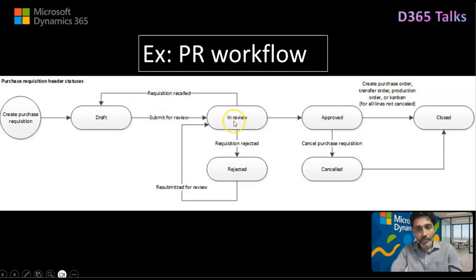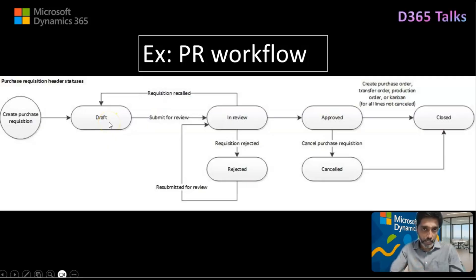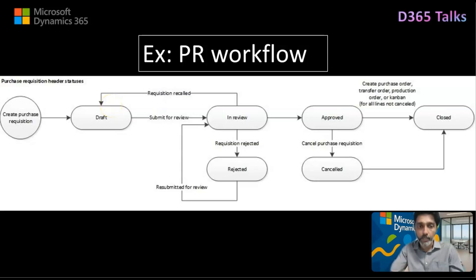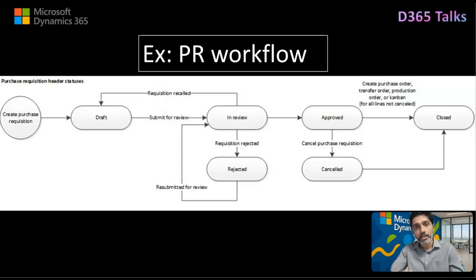If the document is In Review, you have the possibility, as a reviewer — who is the reporting manager — to go ahead and approve it or reject it. If they approve it, it can potentially be converted into a purchase order and the document can be closed. They can also cancel the purchase requisition. On the other hand, if I am the user who created and submitted the requisition for review, I can also decide to recall the purchase requisition if I made a wrong submission. I can also decide to view the workflow history at any time, giving you absolute control of the processes so that business documents are consistently approved before being processed.